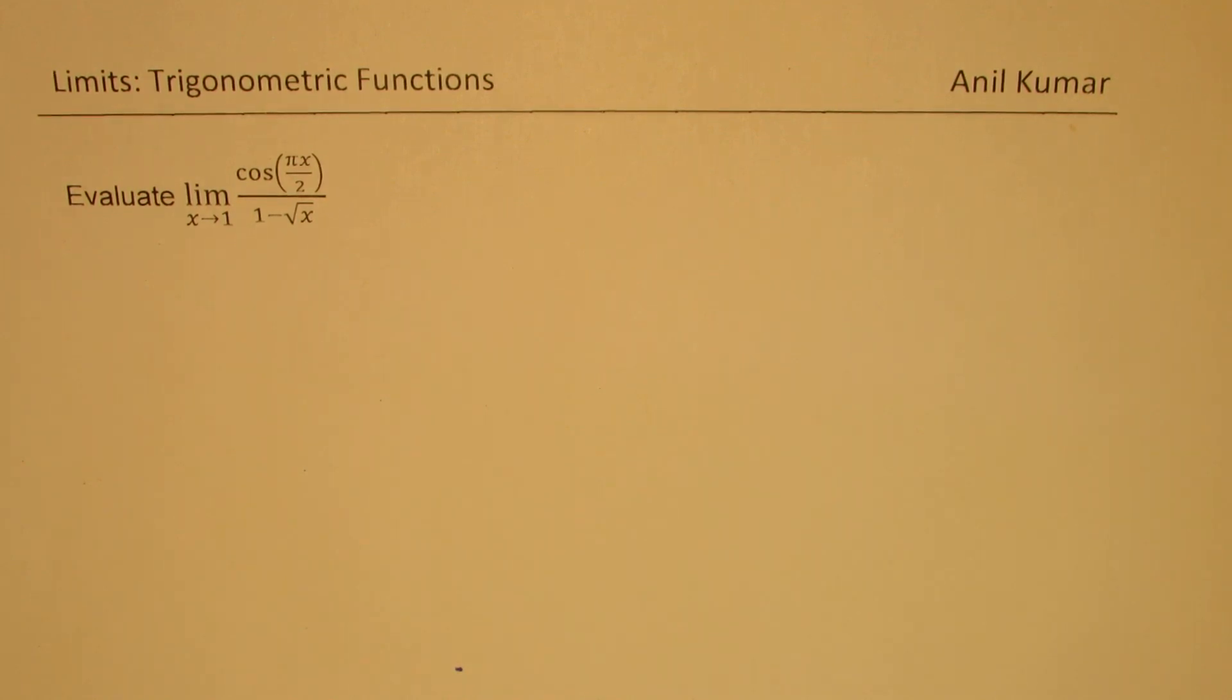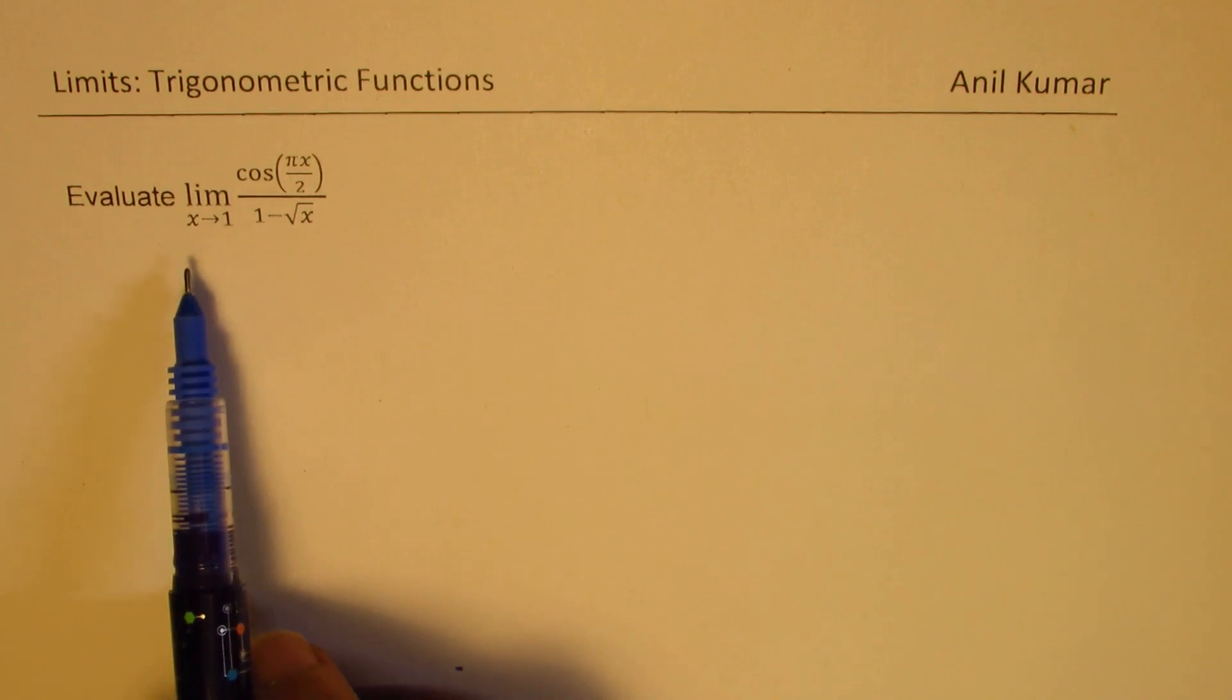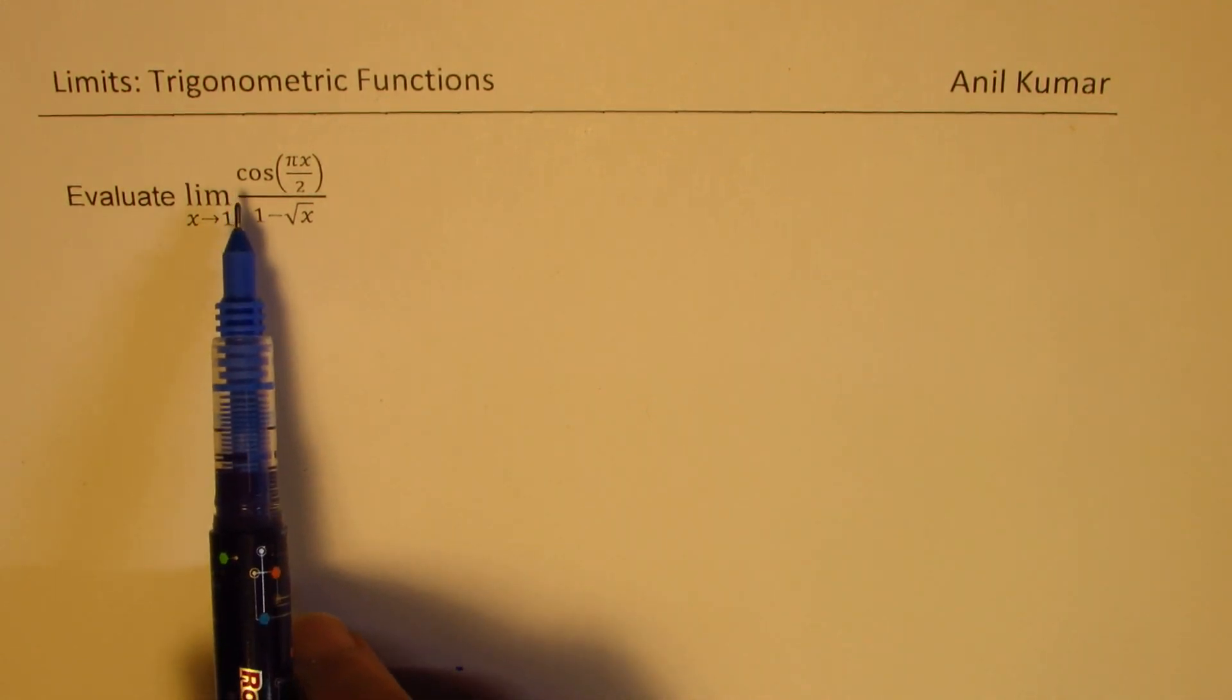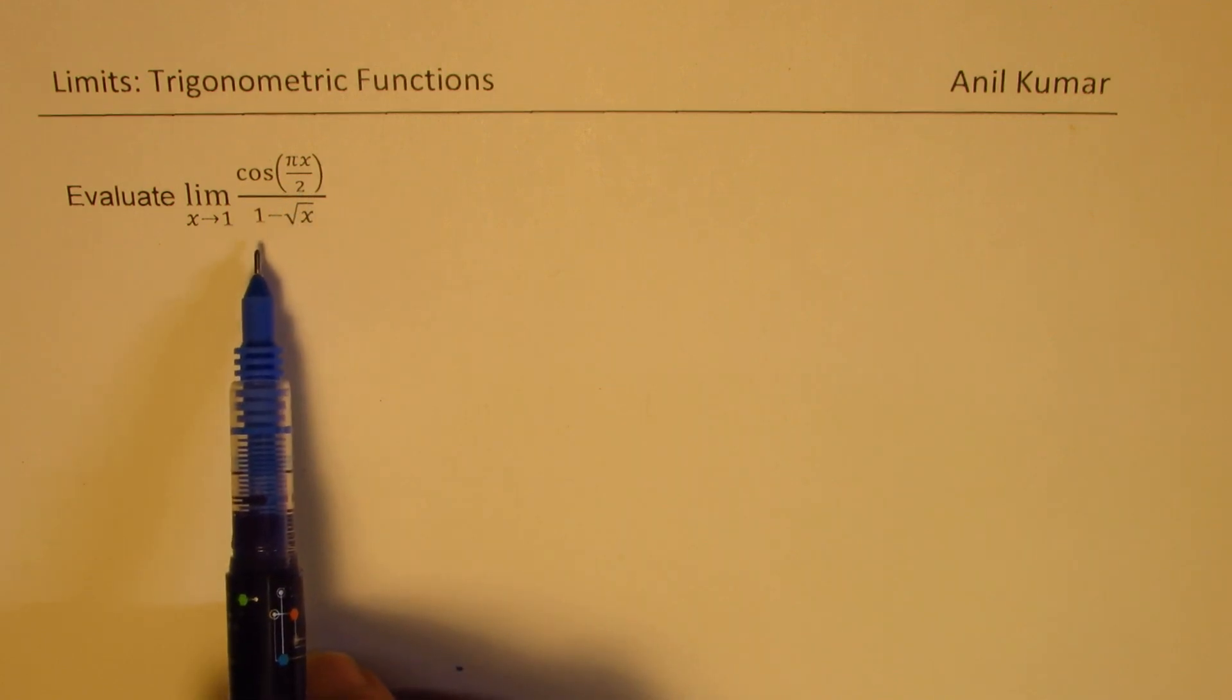Here we have taken a trigonometric function to find the limit. We need to evaluate the limit when x approaches 1 for cos(πx/2) divided by 1 minus square root x.